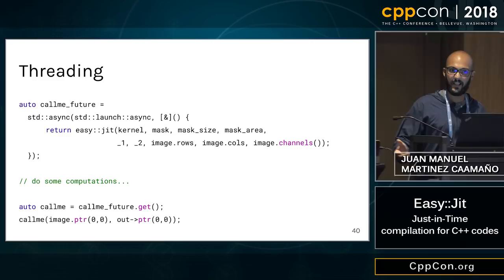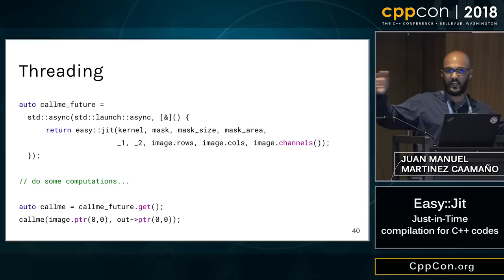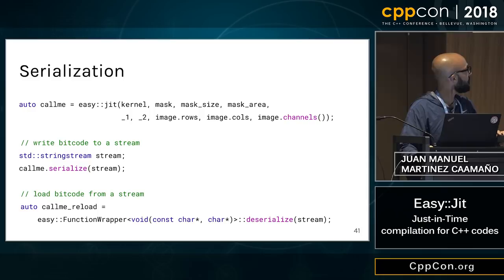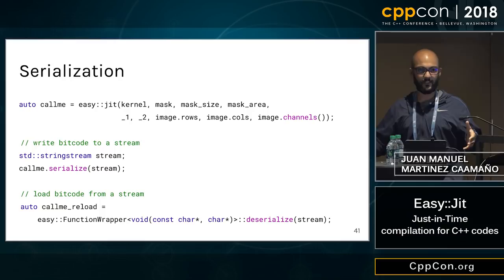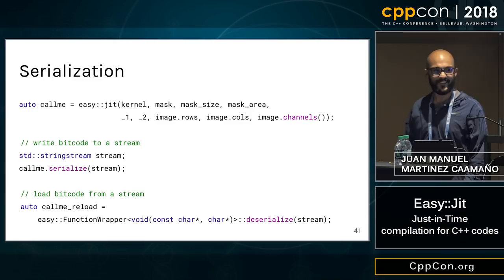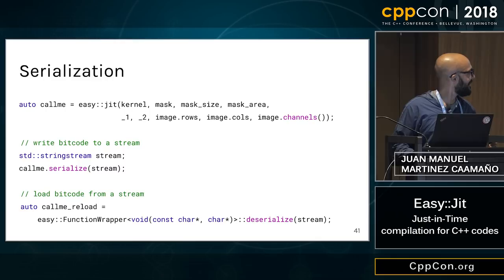For threading — this is only C++, there's nothing special, no language extensions. You can move the objects in, out, and around using regular C++ constructs, and everything is supposed to work, and normally does. You can also do something more fun: serialize your compiled function into a string, send it to a server, and the server loads, compiles, and starts executing it — totally not a security danger.